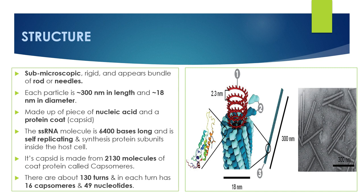Moving on to structure — the complete virus is a submicroscopic, rigid particle that appears as a bundle of rods or needles. Each particle measures about 300 nanometers in length and 18 nanometers in diameter, and it is made up of a piece of nucleic acid and a protein called a capsid. The single-stranded RNA molecule has 6400 bases.